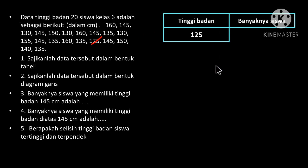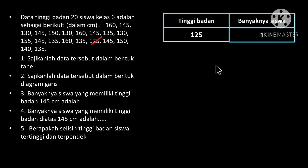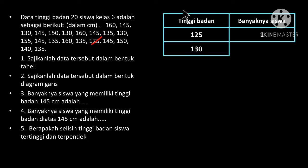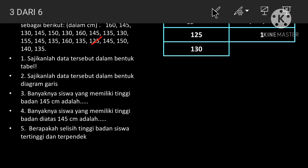Ada satu siswa yang memiliki tinggi badan 125 cm. Tinggi badan yang selanjutnya adalah 130 cm. Mari kita cari bersama-sama. Satu, dua, tiga.